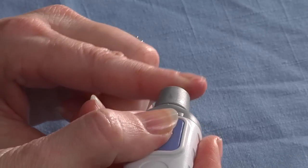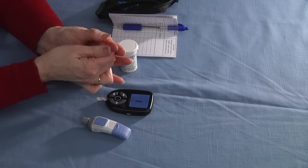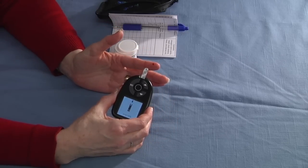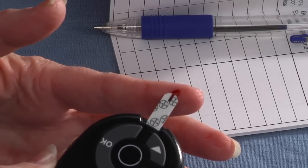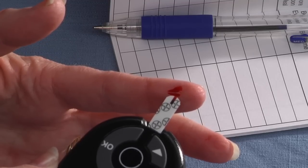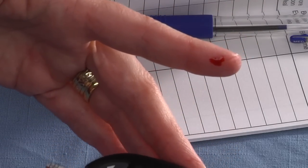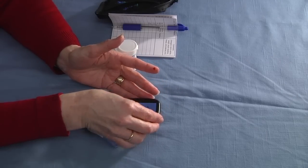If you don't see blood right away, simply milk your finger to get an adequate sample. Once you have a good sample of blood, simply touch the strip against it and it will draw it into the strip. Now I have about five seconds and it's going to give me a reading.